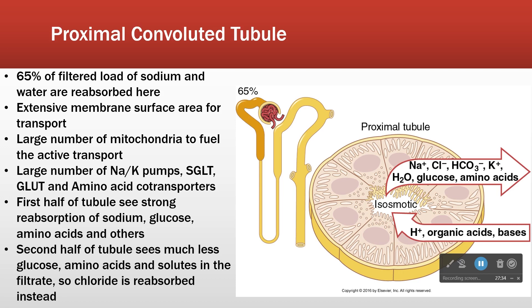Essentially all the plasma volume is going through the bladder and out of the patient. So: lots of mitochondria powering these processes, a large number of sodium-potassium pumps, and we also have our SGLT and GLUT transporters, as well as our amino acid co-transporters, like we saw in that picture earlier.